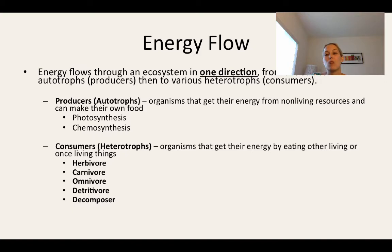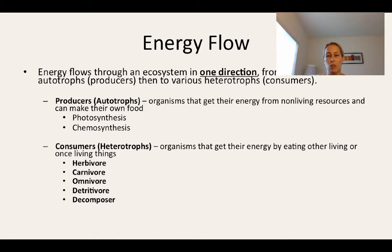Energy flows through an ecosystem in one direction — that's key. Energy flows from the sun, our main source of energy for life on Earth, to our autotrophs and then on to our heterotrophs. Autotrophs can use photosynthesis, or they can use chemosynthesis in which inorganic chemical compounds like sulfur are used in order to help organisms make their own food.